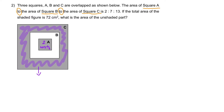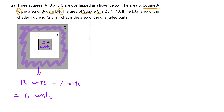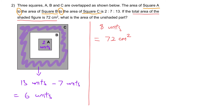What can we say about the shaded part of C? How many units is it? We just need to take the entire area of C, which is 13 units, minus the area of B, which is 7 units, to give us 6 units. Therefore, 6 units from C plus 2 units from A gives us 8 units.